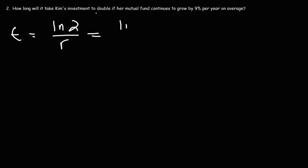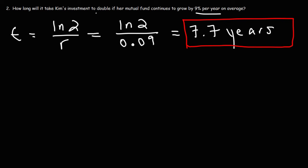Now let's go ahead and plug in the values. R is 9%, but as a decimal we know it's 0.09. The natural log of 2 divided by 0.09, that's 7.7. So if interest is compounded continuously, or if the mutual fund grows continuously at this rate, in 7.7 years her account value will double.